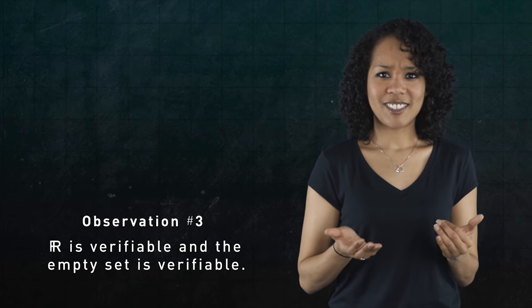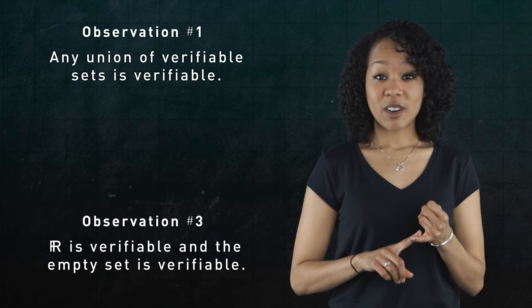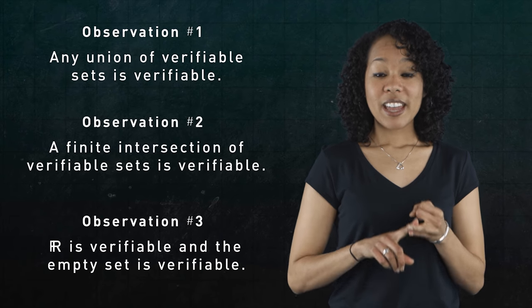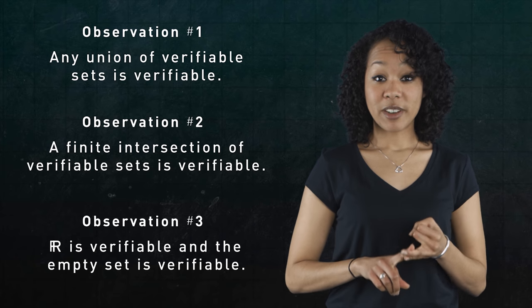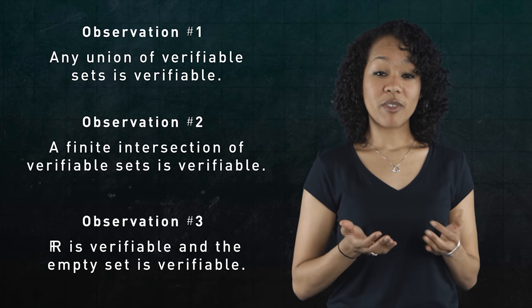Pretty sensible observations, right? Number one, any union of verifiable sets is verifiable. Number two, a finite intersection of verifiable sets is verifiable. And number three, the empty set and the real line itself are verifiable.